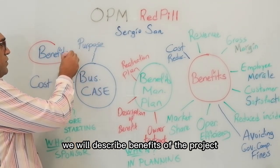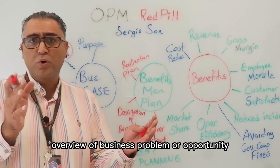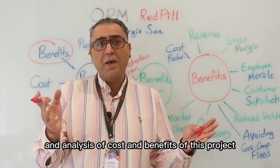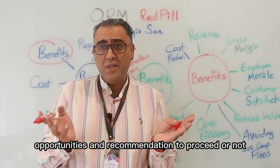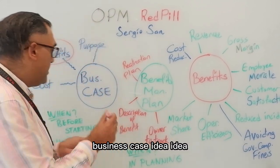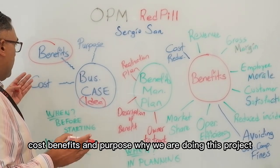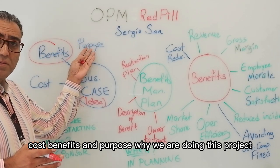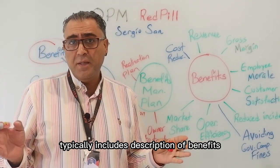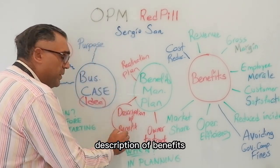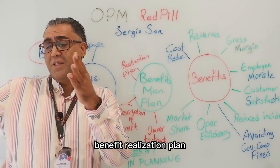The business case typically includes an executive summary, an overview of the business problem or opportunity, analysis of cost and benefits of the project, an assessment of risk and opportunities, and a recommendation to proceed or not. It answers: what is the idea, what are the costs, benefits, and purpose — why are we doing this project and why do we need to invest in it? The benefit management plan typically includes a description of benefits and details to be realized.